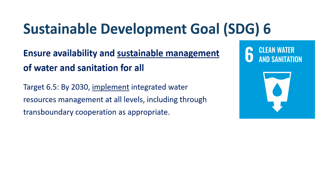A key part of managing fresh water lies in understanding the different needs and roles of people who use that water, as well as the laws, institutions and governance mechanisms that are in place to manage it. These aspects are covered by the IWRM approach, which is the focus of Target 6.5. Target 6.5 is about implementing IWRM — more than simply having a plan — so the stages of implementation across various aspects of IWRM must be monitored.